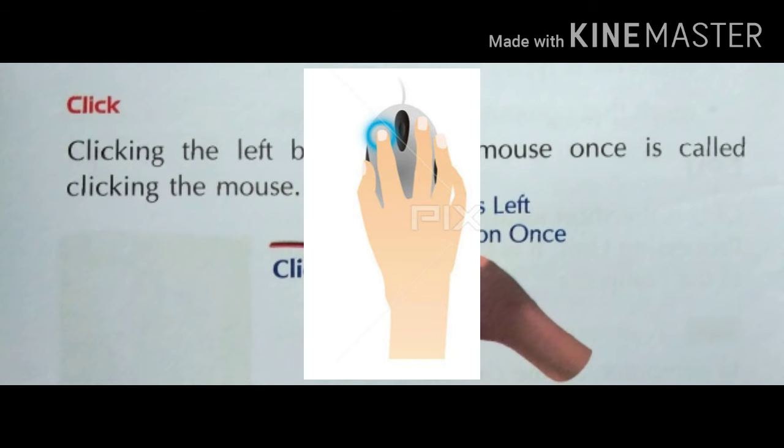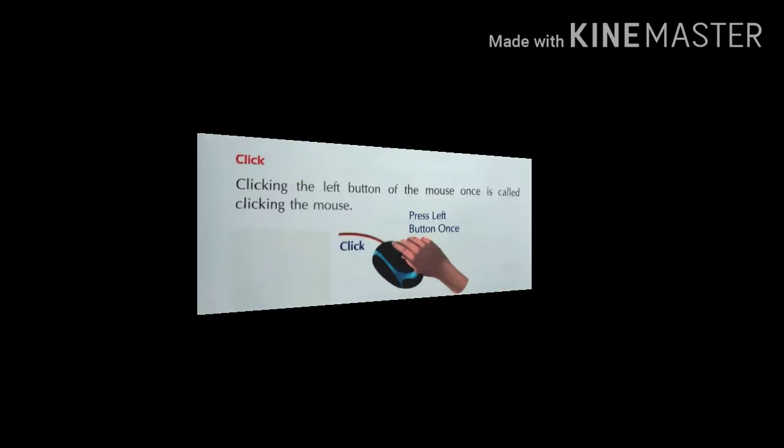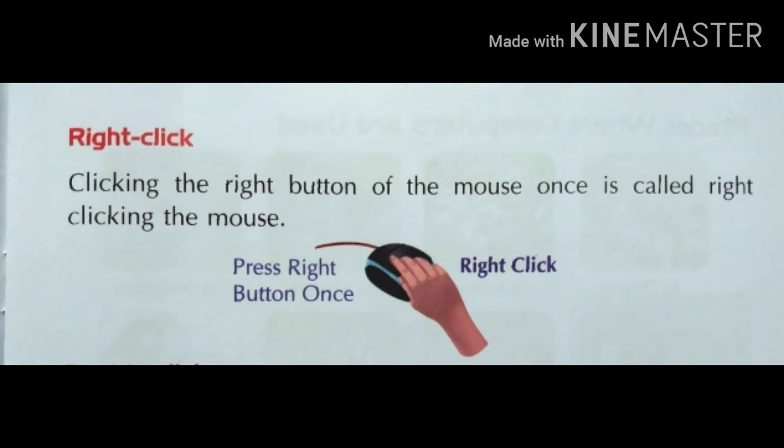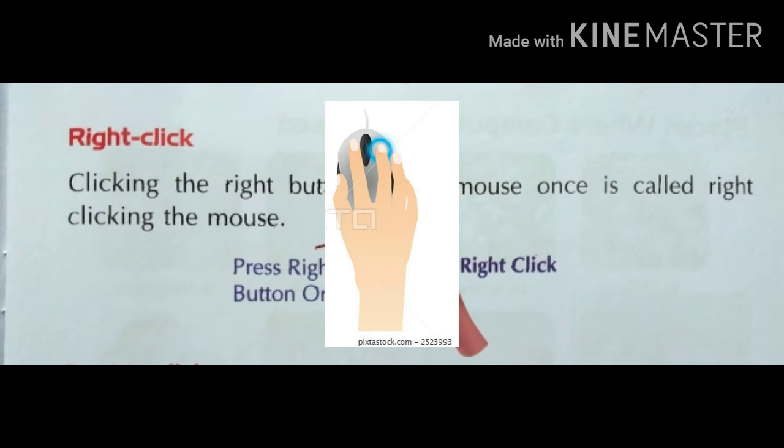Next point is right click. Clicking the right button of the mouse once is called right clicking the mouse. The right mouse button is often used to open contextual menus, which are pop-up menus that change depending where you click.